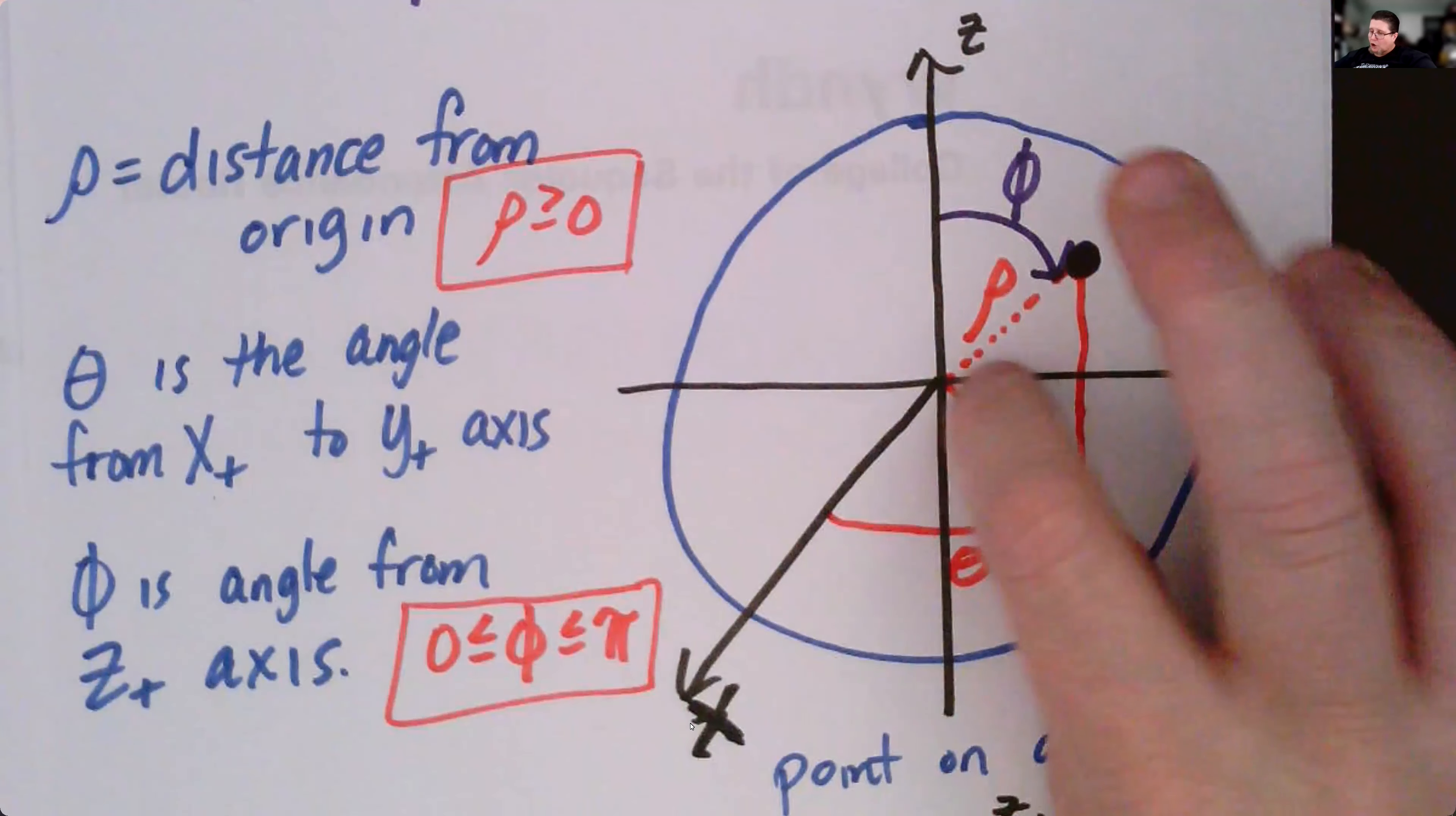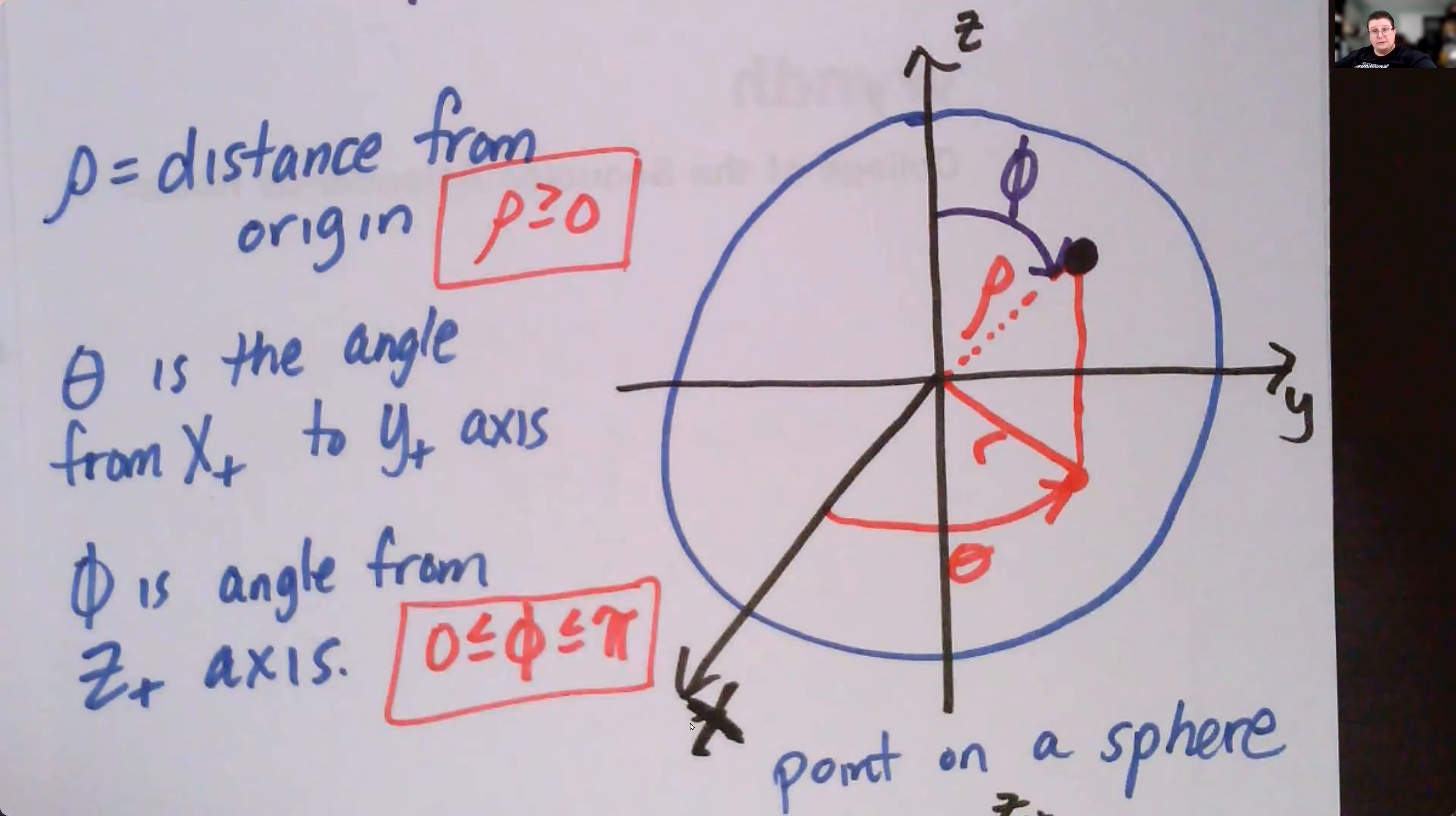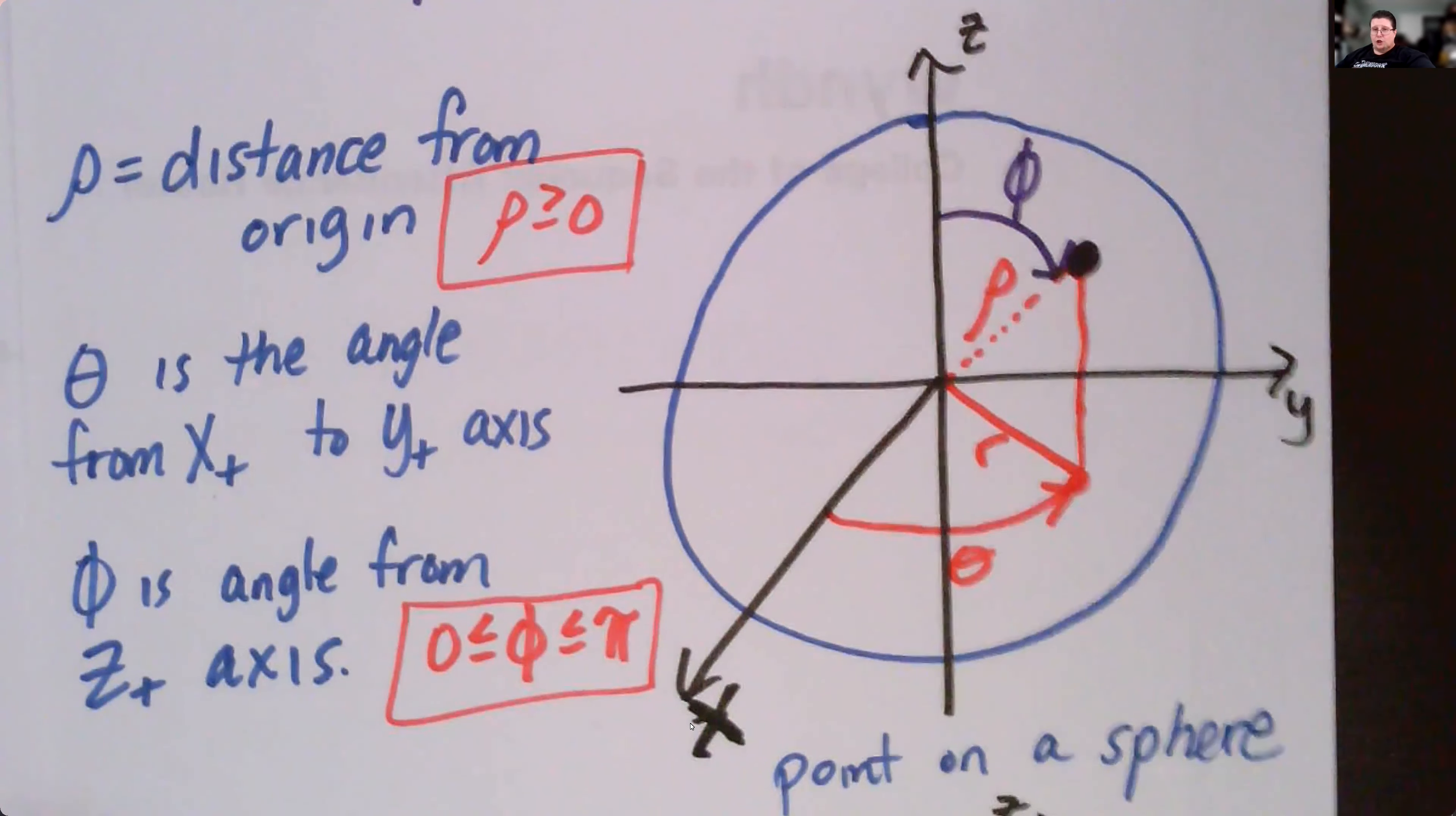Rho is going to be our radius from the origin or the center of this sphere to a point on the surface of the sphere, which is different than r. r is just the in the hemisphere or the circular plane section cutting the circle in half.